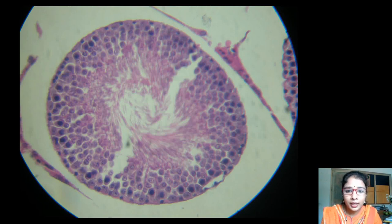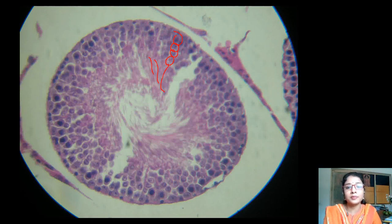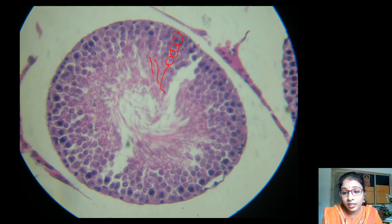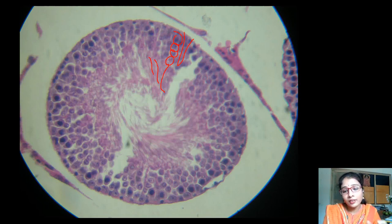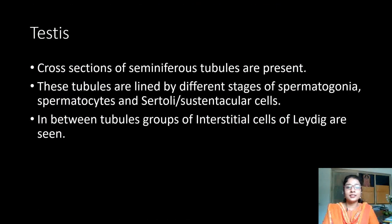We can see many nuclei — these are the developing spermatogonia cells which finally develop into mature sperms. The thin thread-like structures are the tails of the sperms. Apart from spermatogonia cells, there are supporting cells — sustentacular cells or Sertoli cells — present in between the spermatogonia cells. These Sertoli cells are long columnar cells interspersed between the spermatogonia, supporting their development.